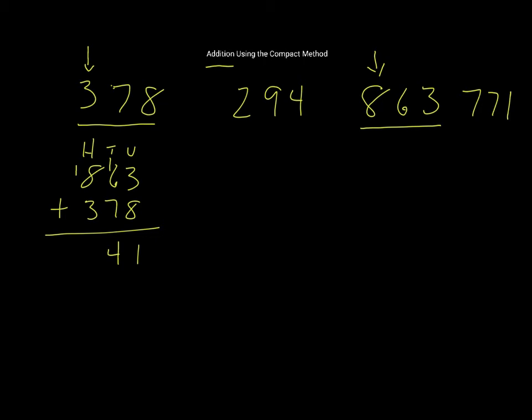I now have 300 add 800 add 100. So 800 plus 100 is 900, plus 300 will be 1241 all together.